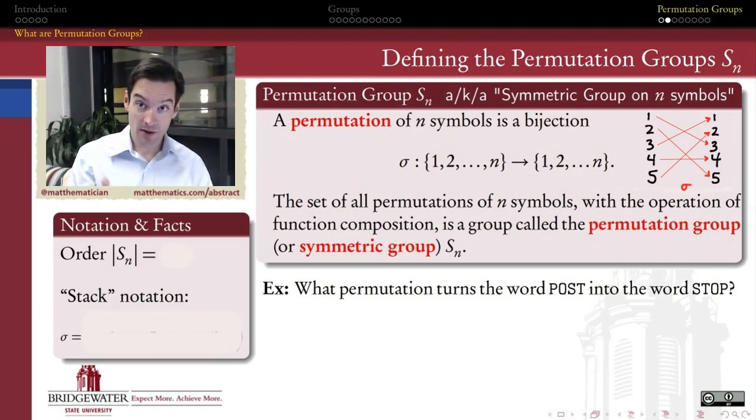We can show that it meets the associativity, closure, identity, and inverses criteria. That group is called a permutation group, or more commonly, a symmetric group S_n—the symmetric group on n symbols. So we can think of this rearrangement of five numbers as an element in the group S_5, the symmetric group on five symbols.